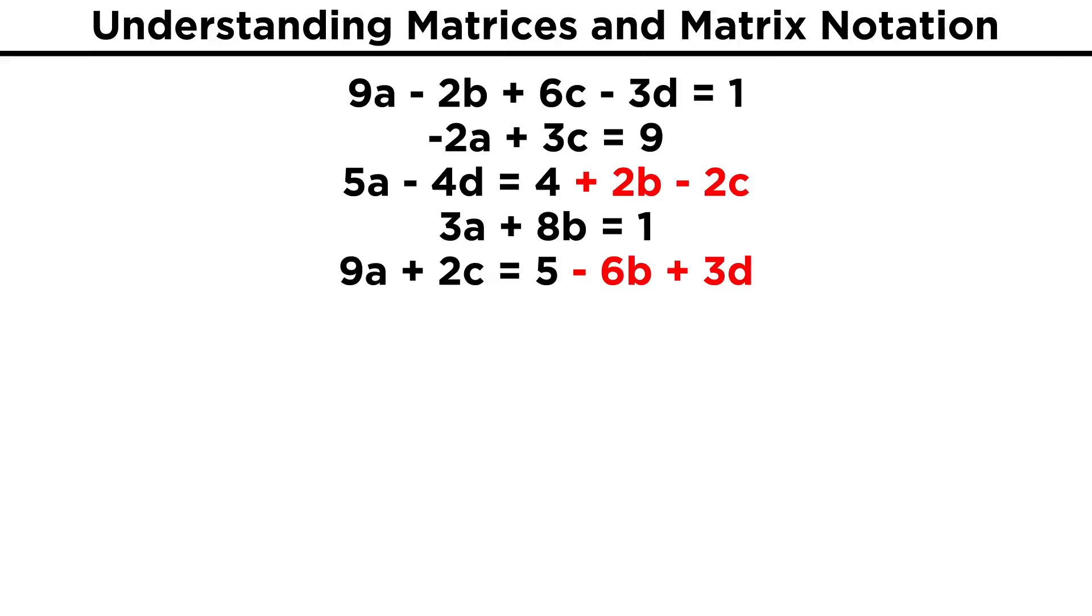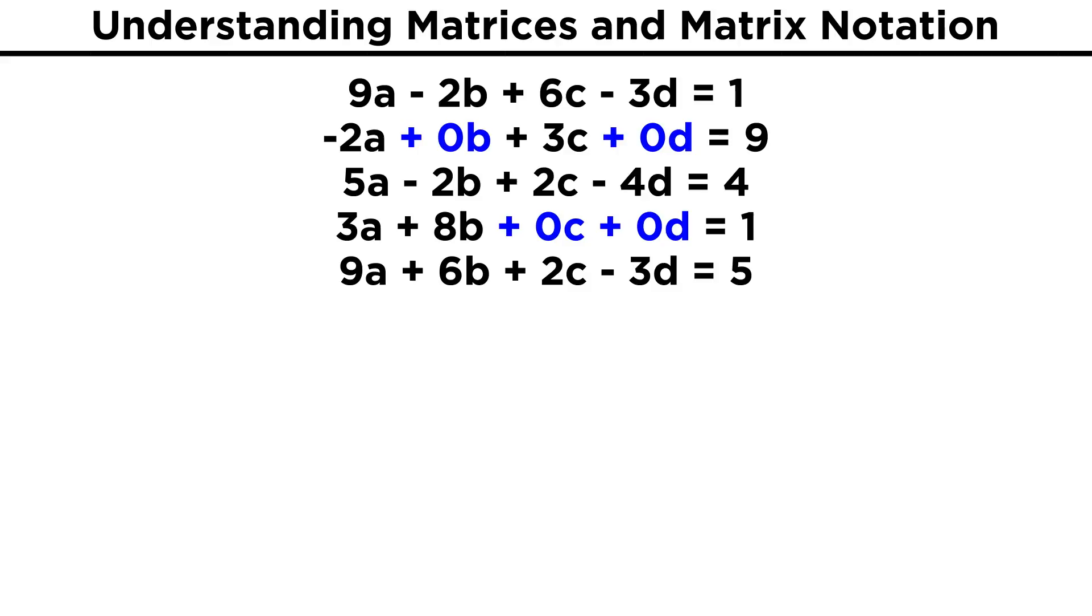First, let's bring these variables that are on the right side over to the left side with the other variables. We have to make sure that the variables are in the same order in each equation, or that will mess up our matrix. Next, anywhere that one of the four variables is missing from an equation, let's put it back in there, but with a coefficient of zero.